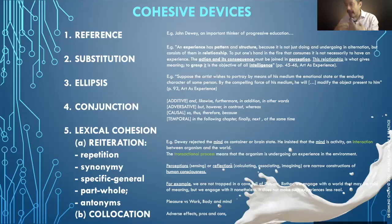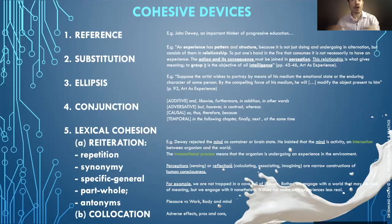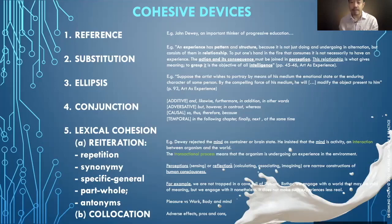Conjunctions come in several types. Additive conjunctions: and, likewise, furthermore, in addition, in other words. Adversative conjunctions show contrast: but, however, in contrast, whereas. Causal conjunctions: therefore, because — showing that this leads to the next thing. Temporal conjunctions relate to time: in the following chapter, in the following section, finally, next, at the same time, simultaneously. These are important conjunctions, especially for signposting.